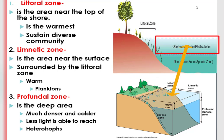The second zone of ponds or lakes is the limnetic zone, sometimes called the open water zone or photic zone. This zone is the area near the surface that is surrounded by the littoral zone. It is warm since it is heated by the sun. Planktons typically live in this area.